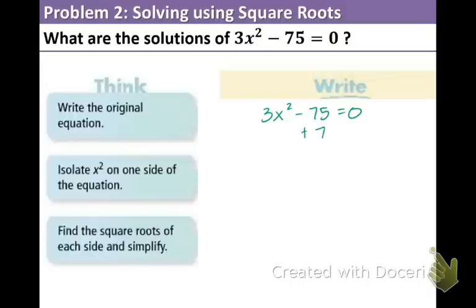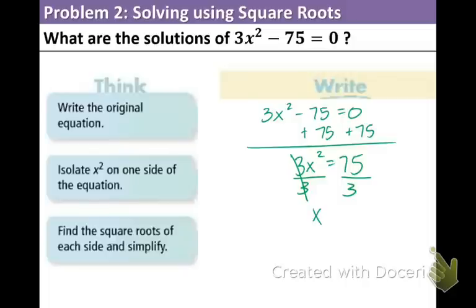That means to get the x-squared by itself. So first we want to move the 75 over. So now we have three x-squared equals 75. We need to get rid of that three in front. The three is attached to that x-squared by multiplication. So to undo that, we're going to divide both sides by three. Cancels out, x-squared equals 25.